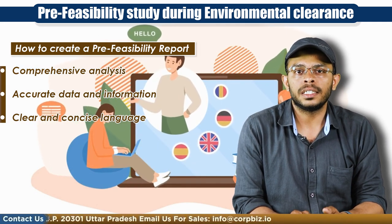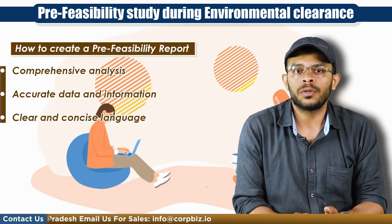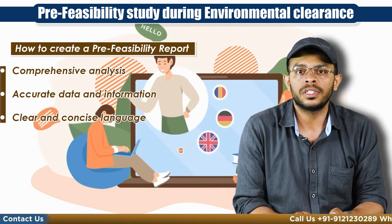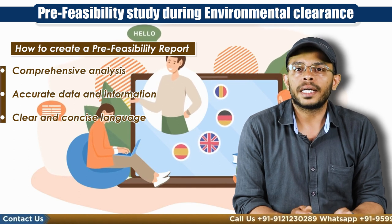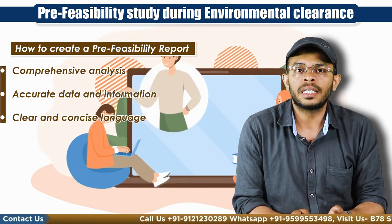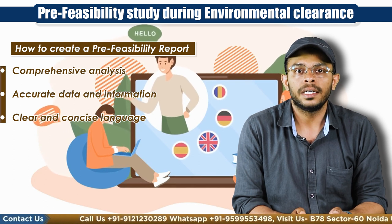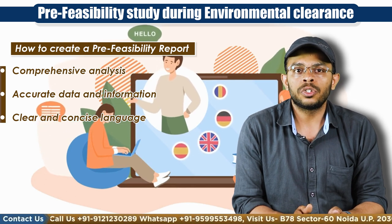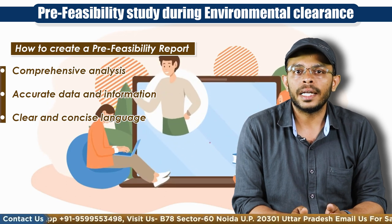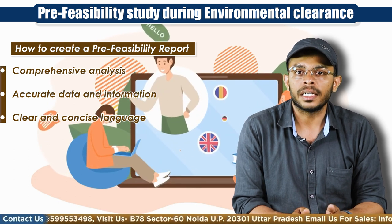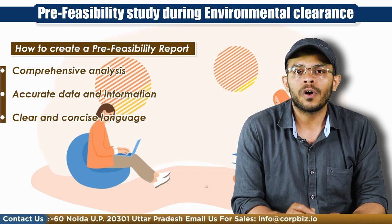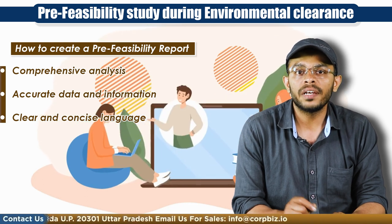The third key point is clear and concise language. The report should be written in language that is easily understandable by stakeholders, including regulatory authorities, investors, and local communities. Technical terms and jargon should be avoided, and complex ideas should be explained clearly. The report should also be well organized with clear headings and subheadings.